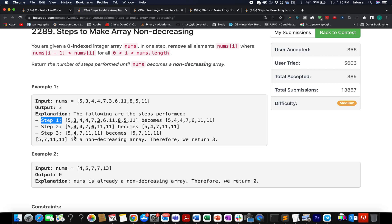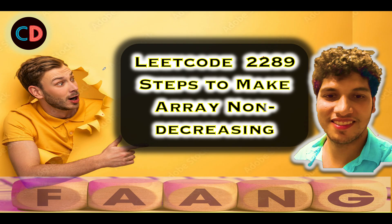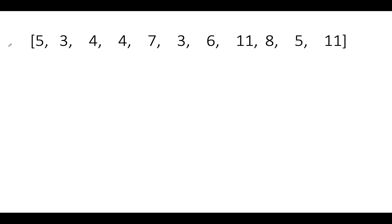Without further ado, let's quickly walk through the algorithm - I'll talk about the algo as well as various test cases to go about solving this question. LeetCode 2289: Steps to make array non-decreasing. It's a medium level question on LeetCode and I also feel the same. If you have any doubt, please feel free to drop a message on the Telegram group or the Discord server of Coding Decoded. Both the links are stated below. Now let's get started - I'll explain the algorithm while driving through test cases.